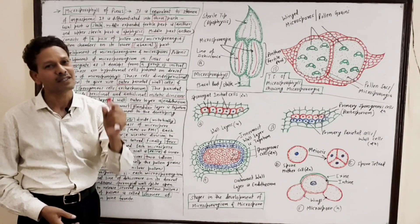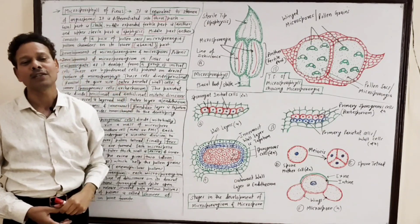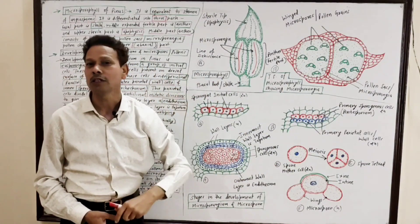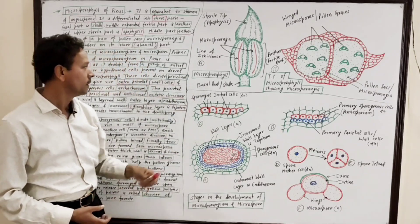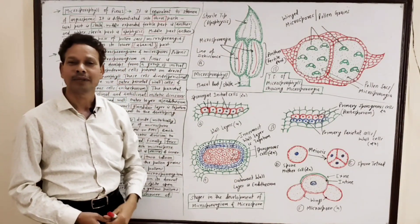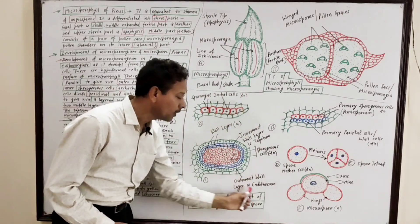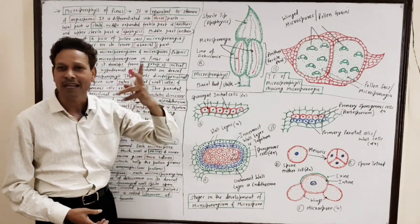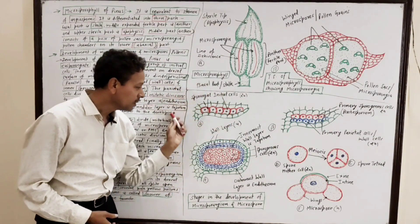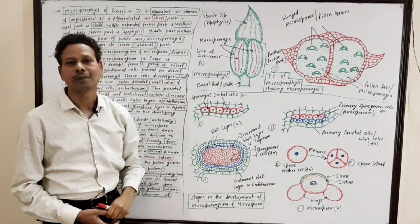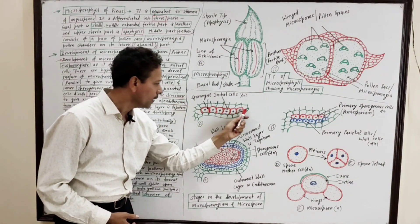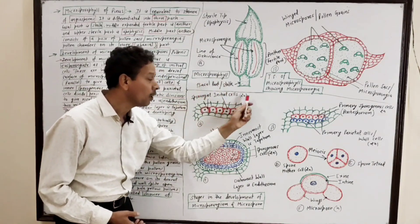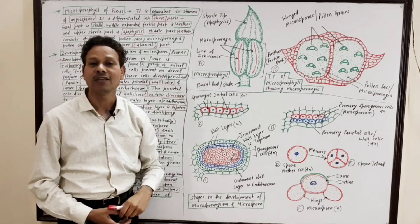Today's lecture covers the development of microsporangium and development of pollen grains — a very important topic for BSc students. In Pinus, the development of microsporangium is of the eusporangiate type, meaning the entire microsporangium develops from a group of initial cells. These cells are diploid cells named sporangial initial cells, and this group of initial cells is hypodermal — that is, just below the epidermis.